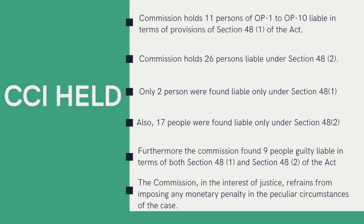The Commission finally moved on to the topic of penalty. It directed that OP1 to OP10 and their respective officials held liable under Section 48 of the Act were to cease and desist in future from indulging in practices found to be in contravention of Section 3 of the Act. With regards to the imposition of monetary penalty, the Commission observed the following: first, that the parties had not only cooperated but had even admitted their respective roles as brought out by the DG; second, that some of the OPs are micro, small, and medium enterprises with small turnovers in the sale of composite brakes; third, the prevailing economic situation due to the outbreak of the global pandemic COVID-19; and finally, since the ultimate objective of the Act is to correct market distortions and discipline market participants, the Commission decided to refrain from imposing any monetary penalty in the peculiar circumstances of this case.